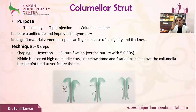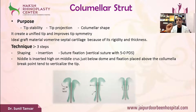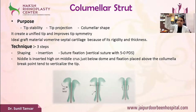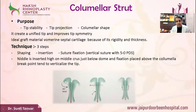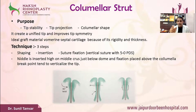For the columella strut technique, there are three steps. First, shaping: make it 20 mm long, 2.5 mm wide, and 1-1.5 mm thick. Second, insertion: create a pocket over the anterior nasal spine and insert the strut. Third, suture fixation: once you create the pocket and place the strut, the first suture is placed just below the dome area and fixed with a 5-0 PDS suture.